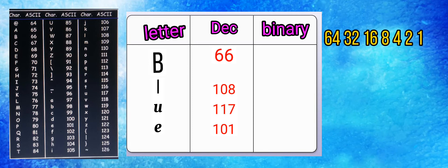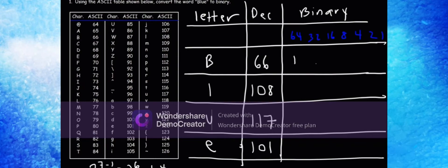To get 66, we need to add up 64 and 2. So we're going to put 1 for those values: 1, 0, 0, 0, 0, 1, 0. That is the binary equivalent of 66.